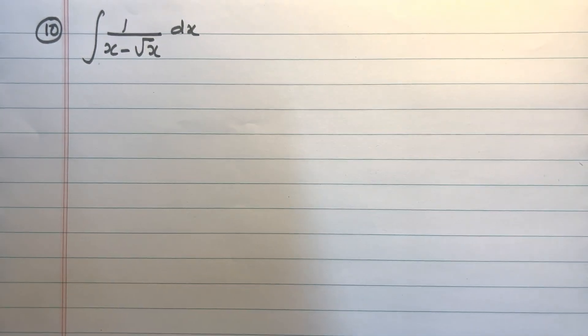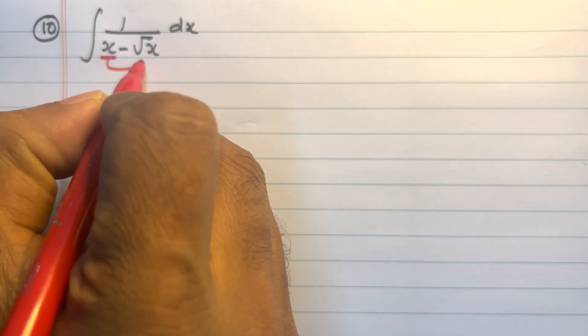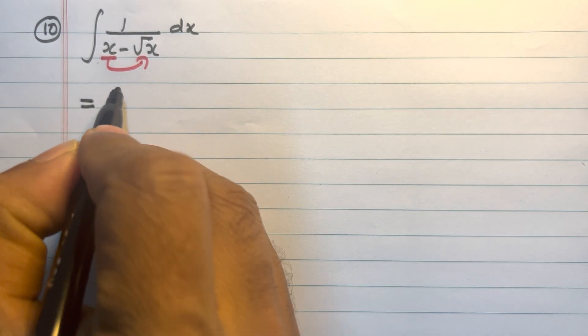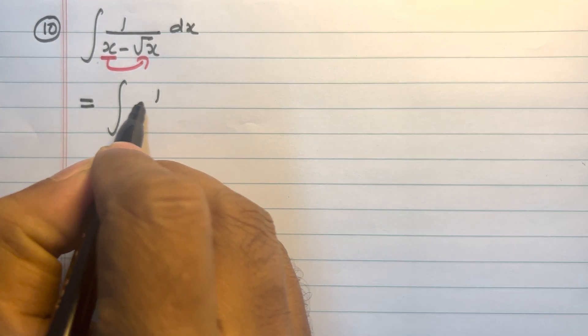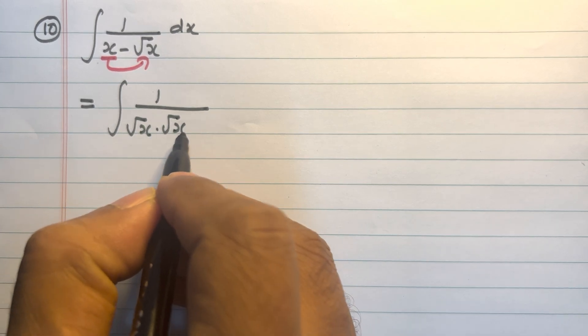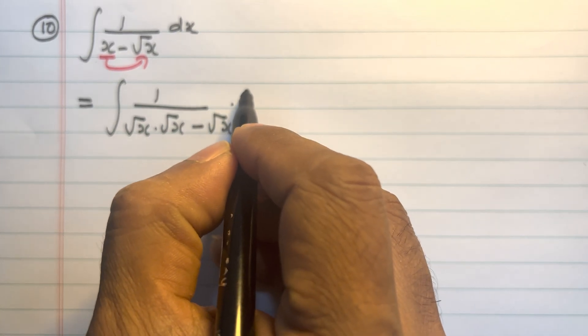Question number 10. Integral of 1 divided by (x minus root x) into dx. Please write x in terms of root x. So the integral becomes 1 divided by (root x into root x minus root x) into dx.